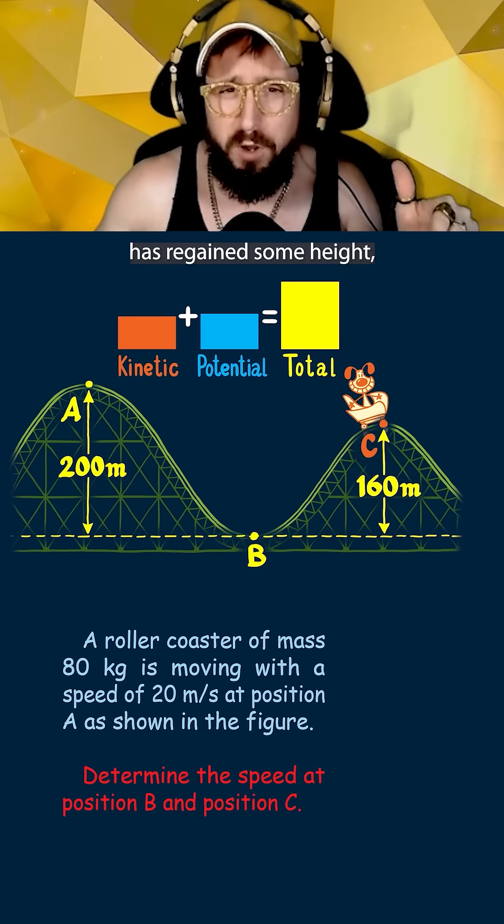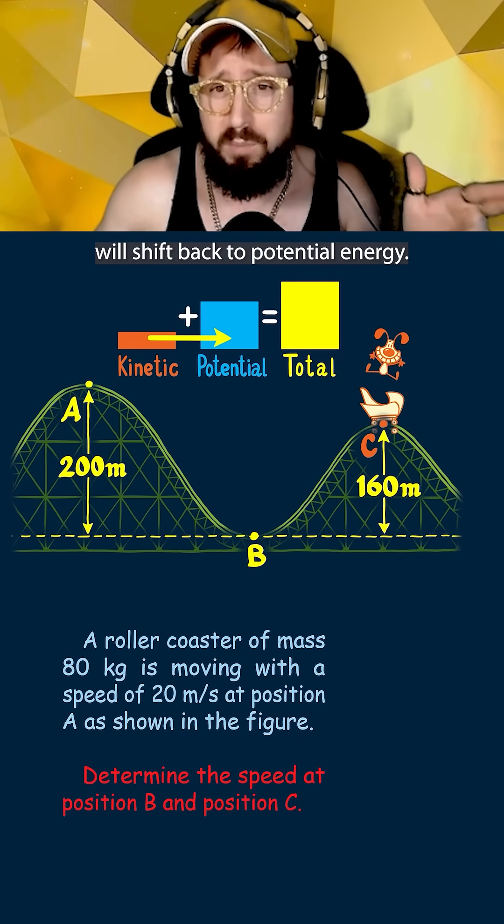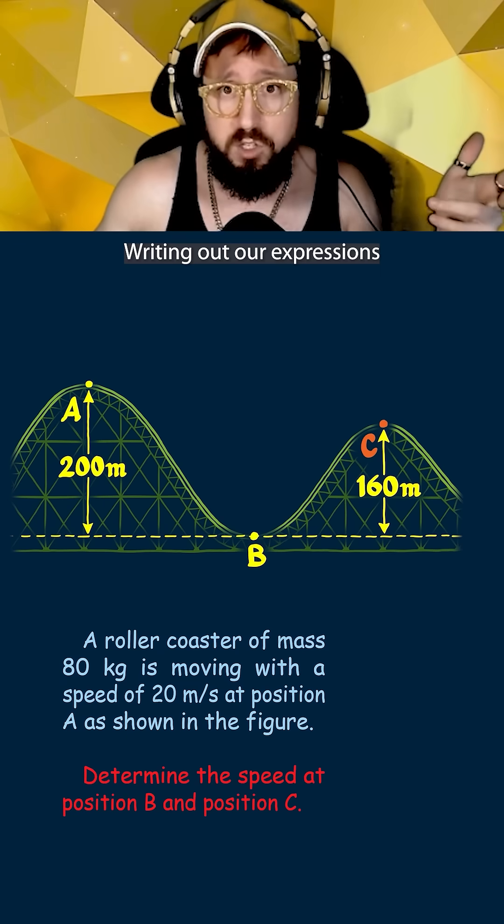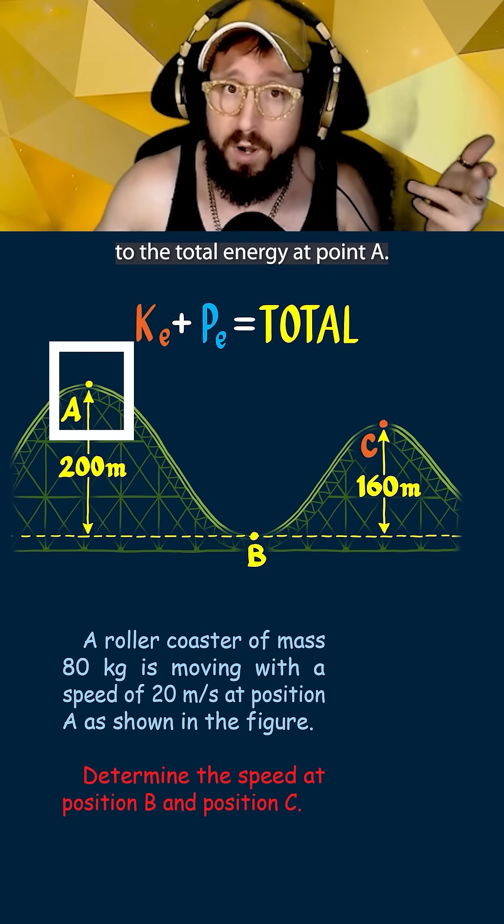Now looking at point C when the roller coaster has regained some height this means that some of the kinetic energy will shift back to potential energy. Writing out our expressions for kinetic and potential energy we will add them together and again set them equal to the total energy at point A.